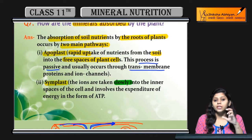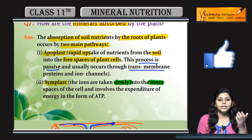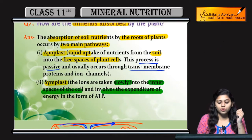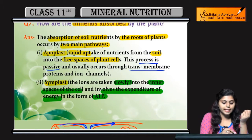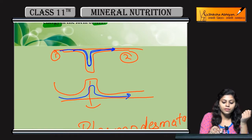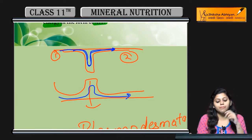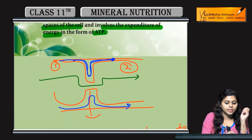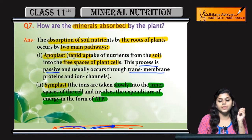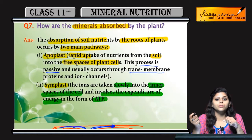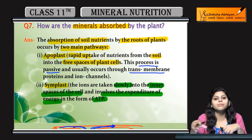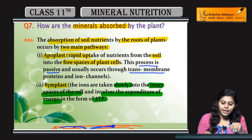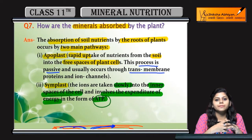Symplast pathway mein ions ki uptake hooti hai slowly into the inner spaces of the cell. Cell ke inner spaces mein hooti hai. Iski wajah se expenditure of energy zaroori hooti hai — energy ATP ki form mein. Symplast mein movement hooti hai cells ke inner spaces mein. Iski wajah se energy ki requirement hooti hai, because jo cell walls hoti hain woh semi-permeable ya impermeable hoti hain, kisii kisii cheez ko hi allow karti hain. Isi liye simplast mein ATP ki requirement hoti hai.